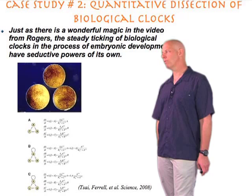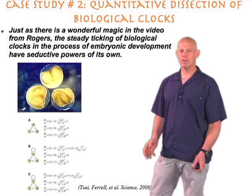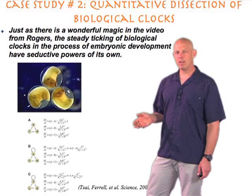People have thought very hard about how to write down mathematical descriptions of biological clocks. Shown on the bottom are three different versions of genetic networks, and next to those networks are equations. If you look carefully you'll see they say things like dA/dt — that's the rate of change of concentration of element A in the network.